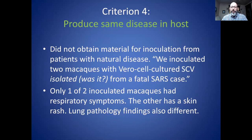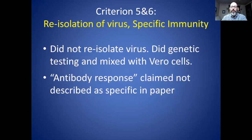They only did this with two macaques, and only one of them had respiratory symptoms. Even if you say they really did inoculate them with something isolated from a sick person, they didn't cause the same disease in both hosts. The other macaque had a skin rash, and when they examined their lungs at autopsy — they killed the animals right after the experiment — one had extensive lung pathology and the other did not. For criteria five and six, they did not re-isolate the virus; instead they did genetic testing, taking secretions from the macaques and mixing them with Vero cells and antibiotics — the same original procedure. They did claim an antibody response but did not describe or test its specificity against other antigens.